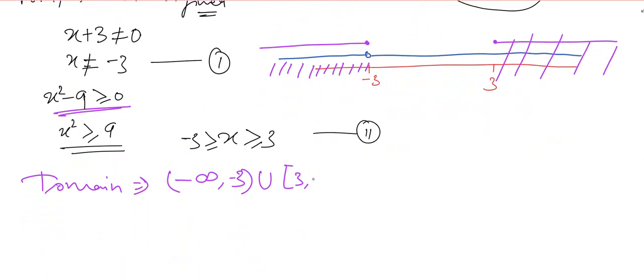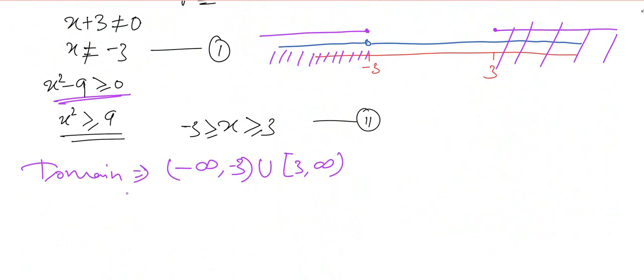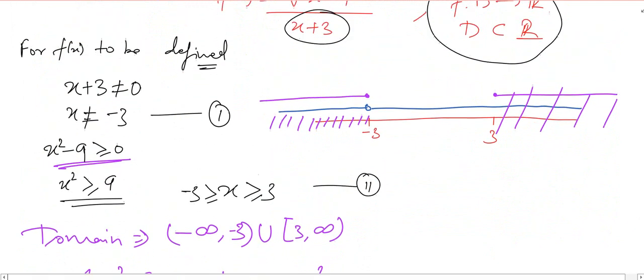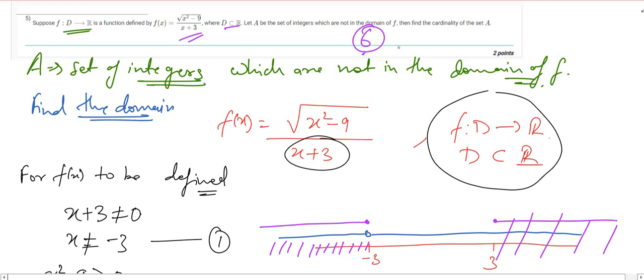Minus 3 and 3 to infinity, so this is not in the domain. The set A will be having minus 3, minus 2, minus 1, 0, 1, 2. The cardinality is being asked, so the answer is 6.